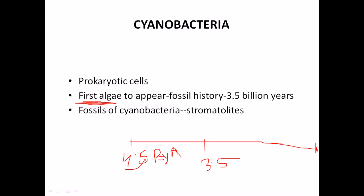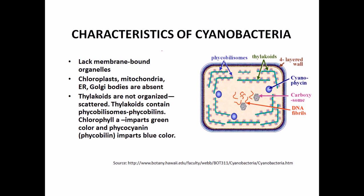We can see fossils of cyanobacteria called stromatolites. Looking at the characteristics of the cyanobacterial cell, as it is a prokaryotic cell, it has a cell membrane and also a cell wall layer outside. Inside the cell there are no membrane-bound organelles.